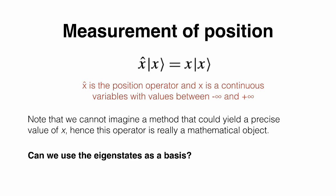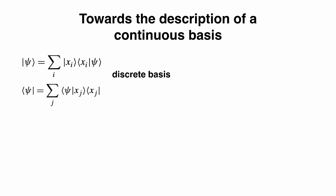In this course we have mostly worked with bras and kets, manipulating them using operators. Let's introduce the operator x̂. We put a hat on the operator so there is no ambiguity about what is a number, what is a ket, and what is an operator. The definition is that the operator x̂ applied to an eigenstate — the ket x — gives the position of that ket.